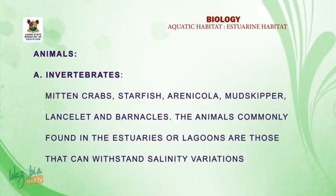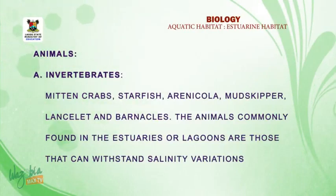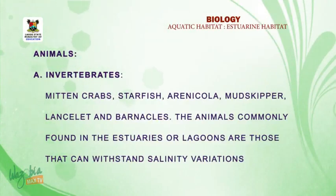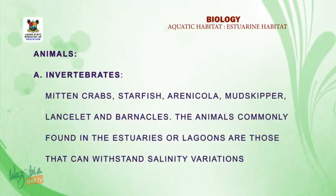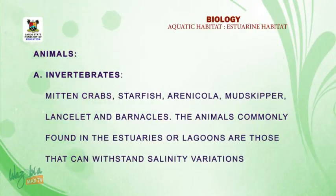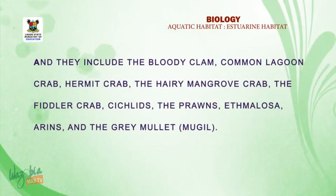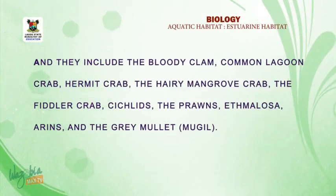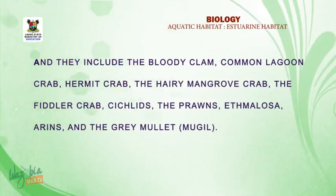Now let's look at examples of animals found in the estuary. We have invertebrates, birds, and mammals. Examples of invertebrates include mud crab, starfish, Renicola, mudskipper, limpets, and barnacles. These animals are commonly found in the estuary or lagoon because they can withstand salinity variation. They include the bloody clam, common lagoon crab, hermit crab, hairy mangrove crab, fiddler crab, cichlid, prawns, Ethmalosa species, and the grey mullet.